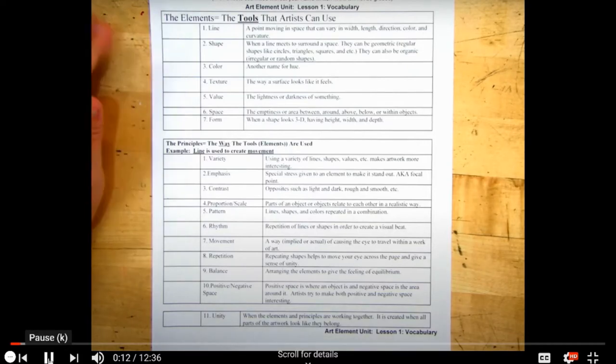The elements of art are the only tools an artist has to use to put on their canvas. They include line, shape, color, texture, value, space, and form.